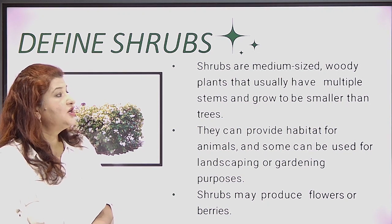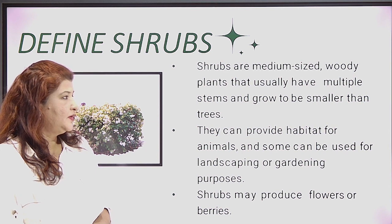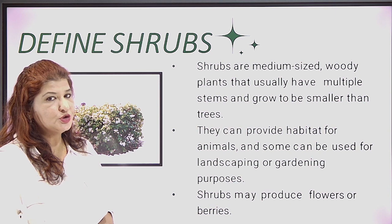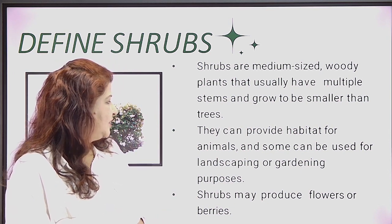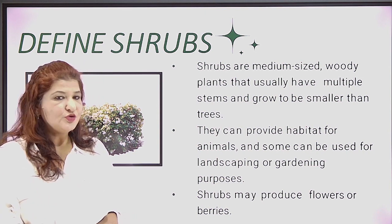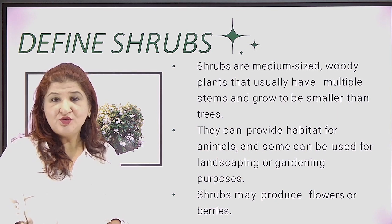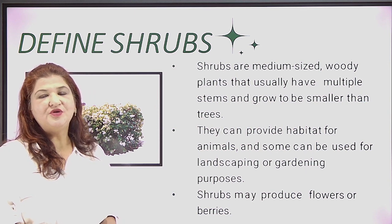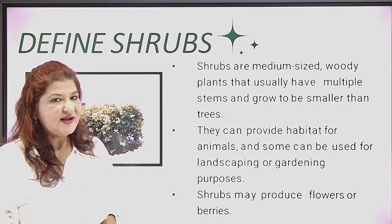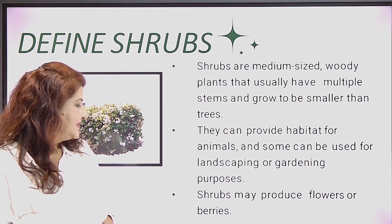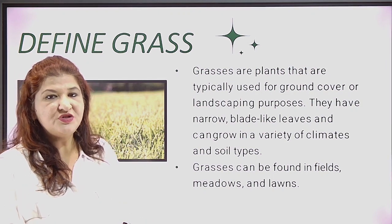What are shrubs? Shrubs are medium-sized and woody. They have multiple stems and grow smaller than trees. Shrubs are not very huge or very big but they have multiple stems. They can provide habitat for animals and birds, and they are used for landscaping purposes. Landscaping means beautifying a place — when you go to hotels or houses, beautiful plants are on display in their gardens. Shrubs may or may not produce flowers, and they are basically very beautifying in gardens.